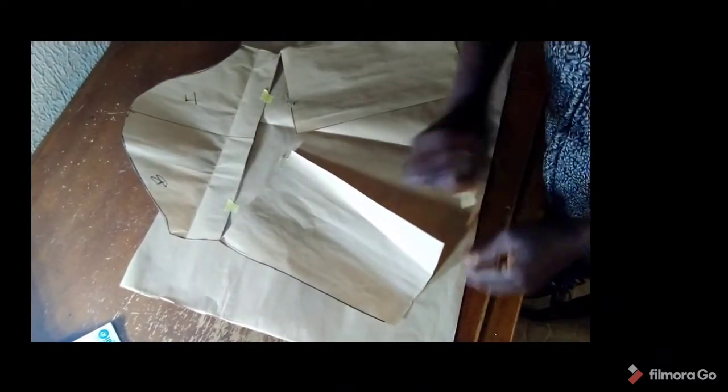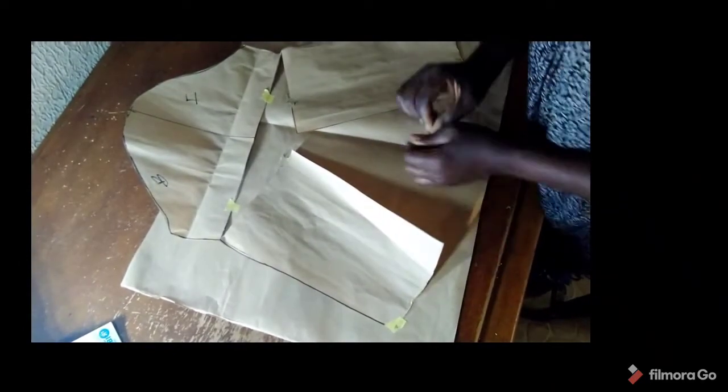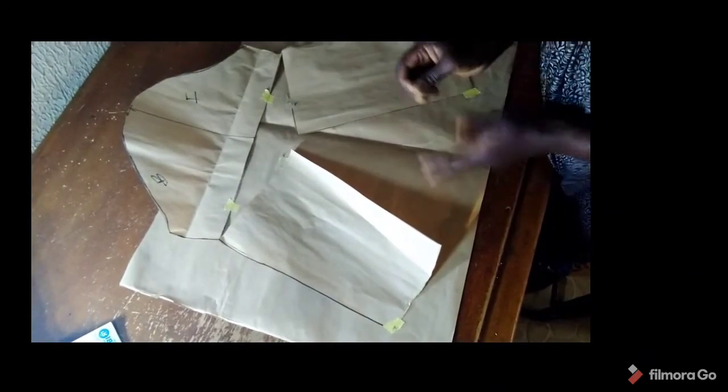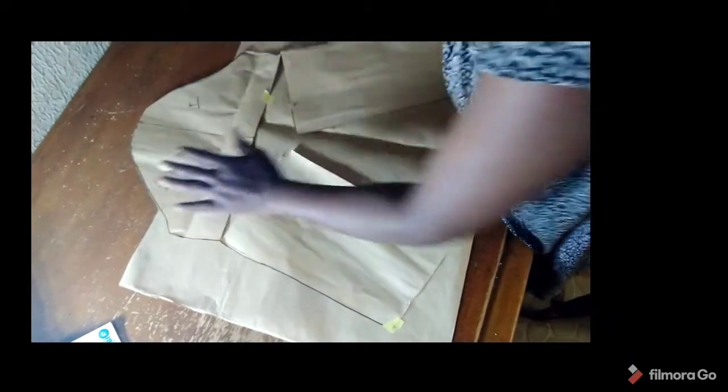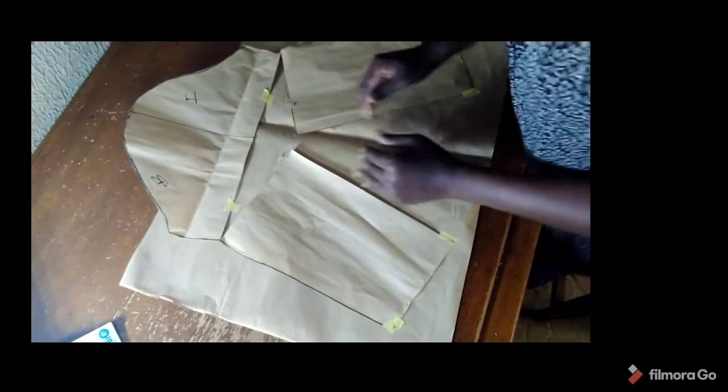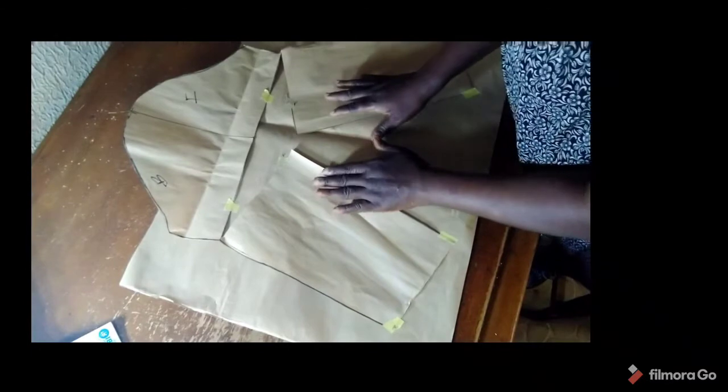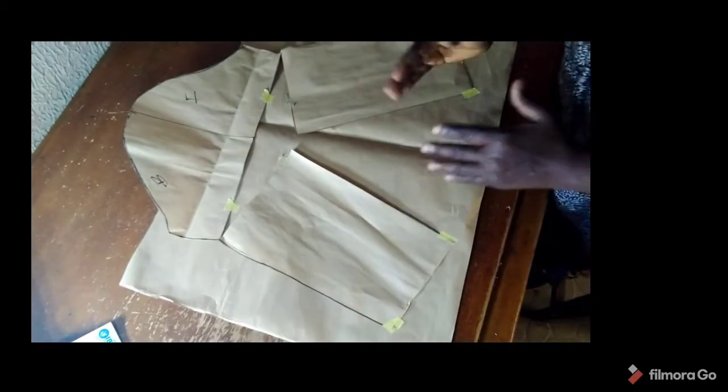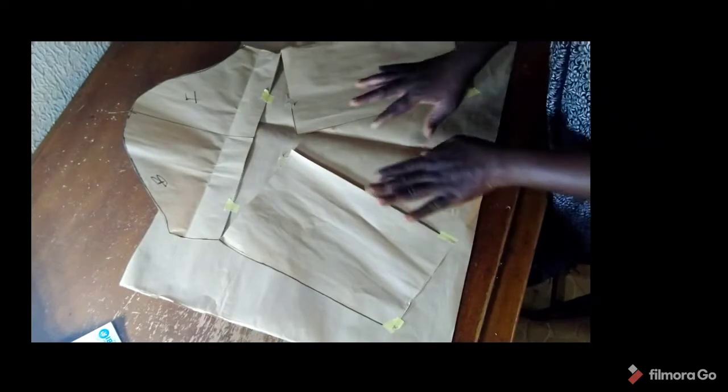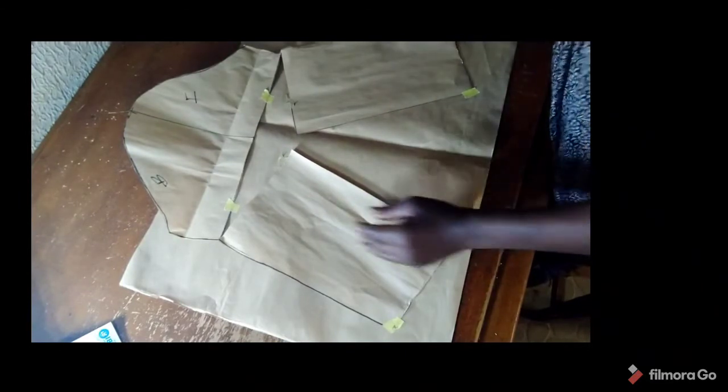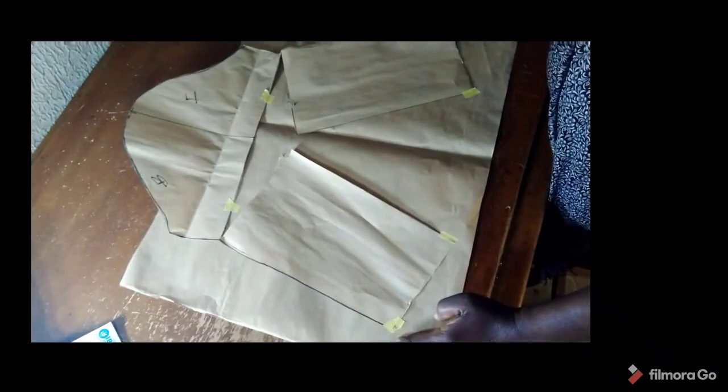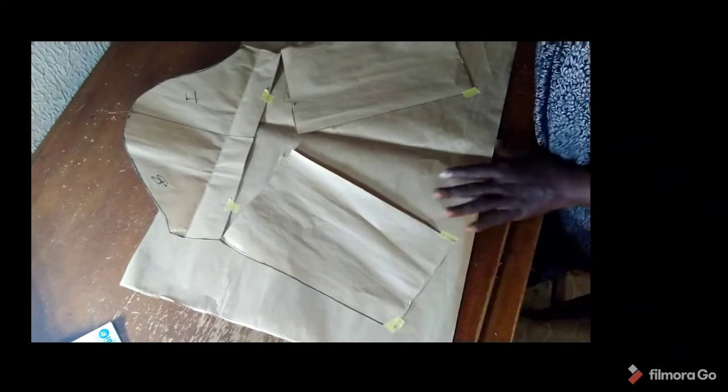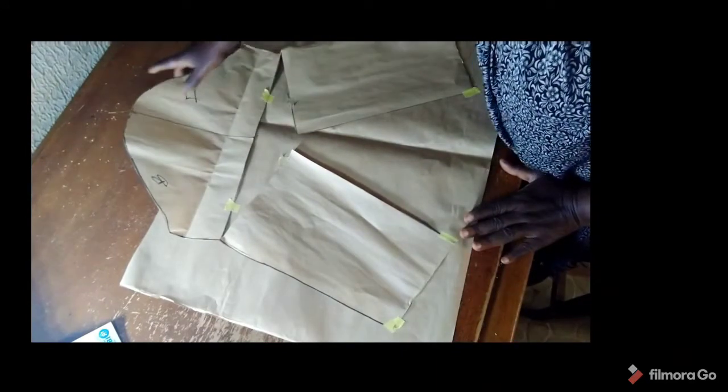I have pinned the upper part with my paper tape so that when I am tracing it out, it won't stress me. If you notice, this place has pushed out a little bit to make provision for the excess that will make it look like bell sleeve. The upper part, I still maintain the fitted shape.